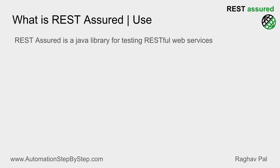Rest Assured is a Java library — we can also say it is a Java API — and it is used for testing RESTful web services. We can also test SOAP web services by doing some workarounds and adding some additional libraries. However, it is primarily created for testing RESTful web services.